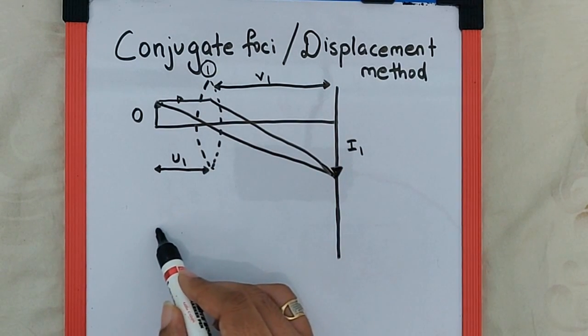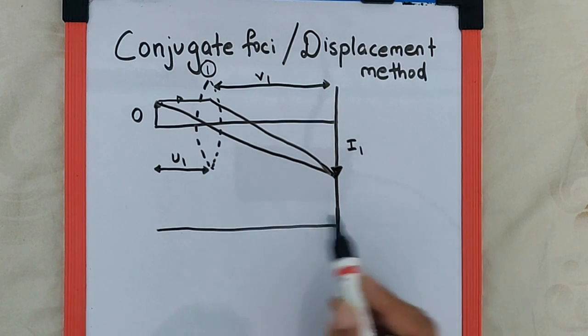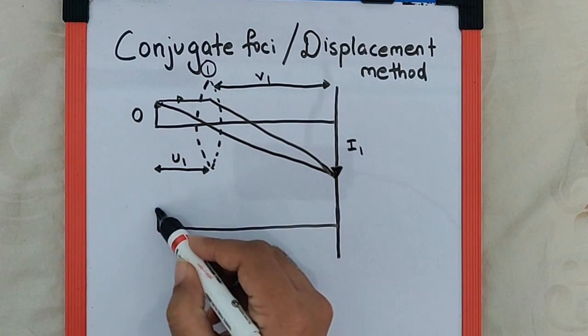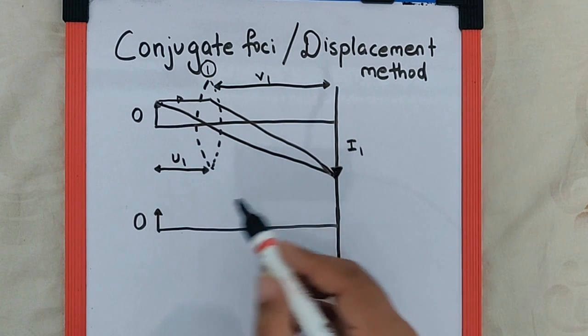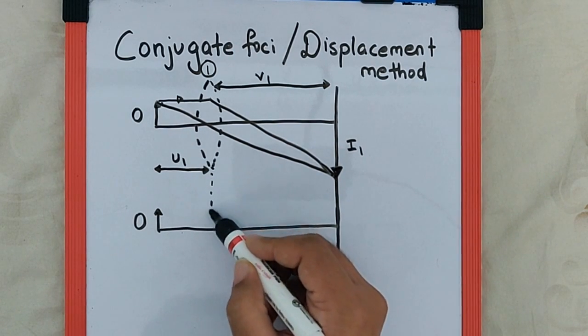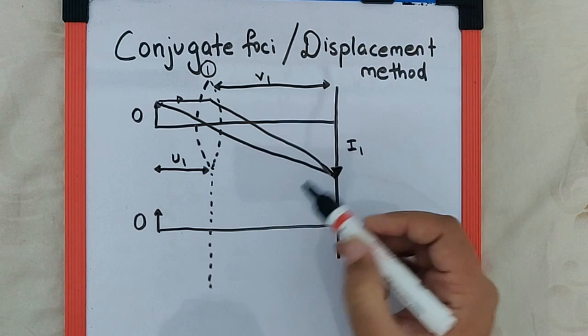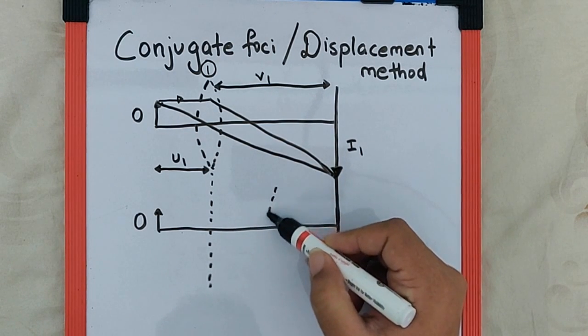Now, for the same position of object and screen and for the same size of object, if we shift the position of lens from point one to point two,